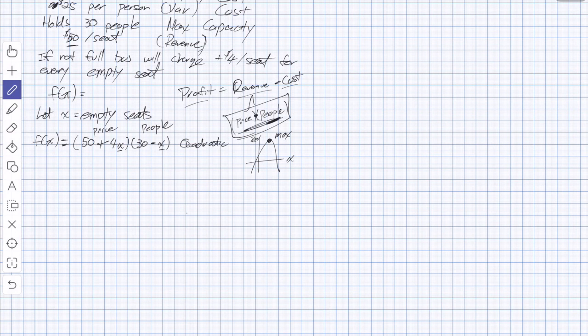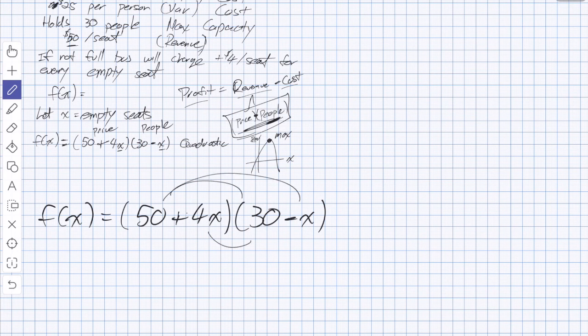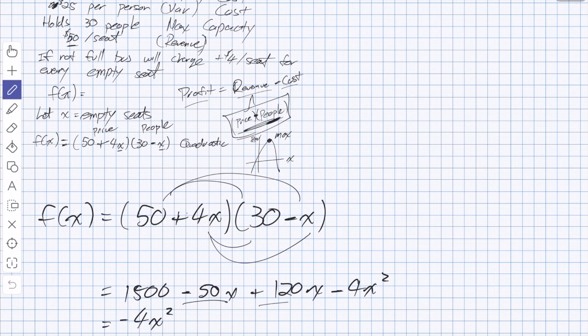So I'm going to rewrite the function. f(x) is equal to $50 plus $4 for every empty seat, multiplied by 30 people on the bus to subtract every single empty seat. We're going to distribute. We're distributing. So 50 times 30 is 1,500. 50 times negative x is negative 50x. 4x times 30 should give us 120x, and 4x times negative x should be negative 4x squared. I'm going to rearrange and collect like terms.